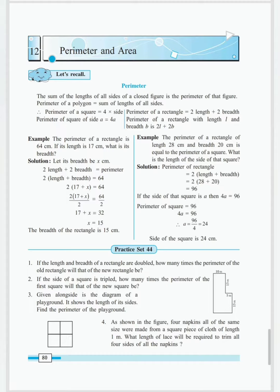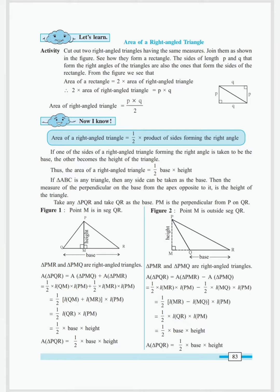Today, we will start with the new point, area of a right-angled triangle. A perimeter means the sum of the lengths of all sides of a closed figure, and an area means measurement of a given closed figure in square meters, in square centimeters, square kilometers, etc.